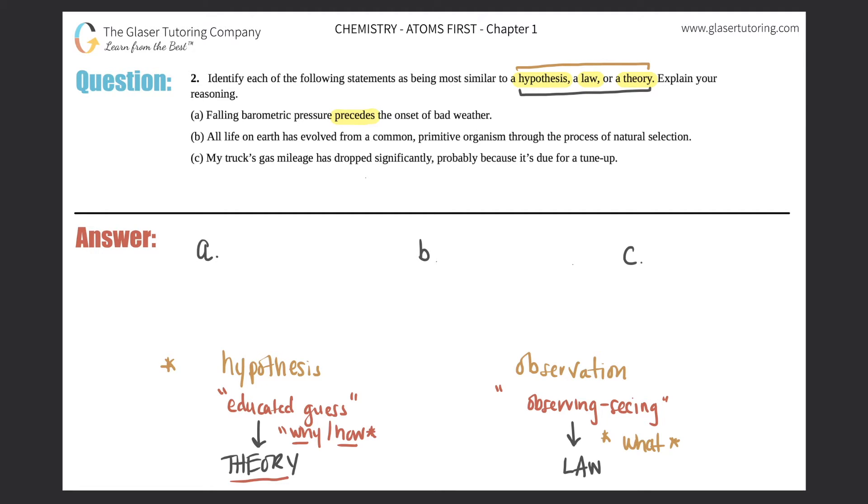All right, so now a, b, and c. Falling barometric pressure precedes the onset of bad weather. So is this an educated guess, is anybody guessing here? Or is there an observation, is someone observing something? Oh, definitely it's observation, right? Falling barometric pressure precedes the onset of bad weather. So what's preceding the onset of bad weather? Falling barometric pressure. So you're asking 'what.'